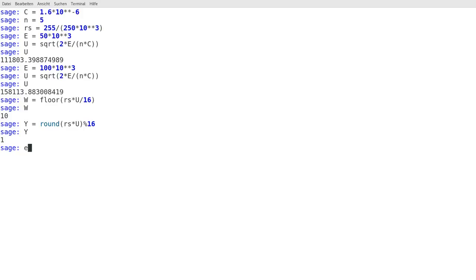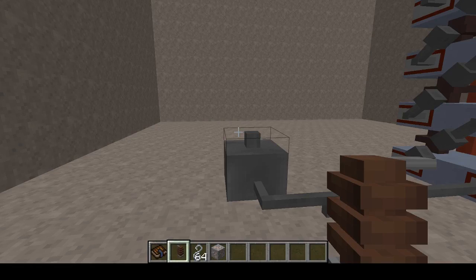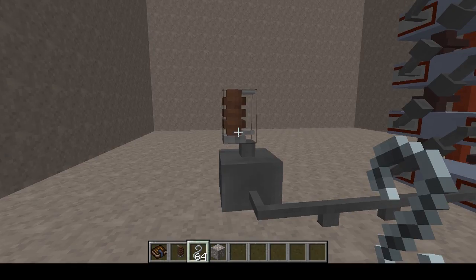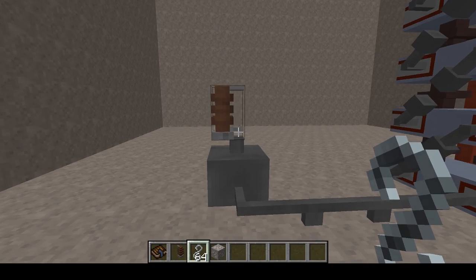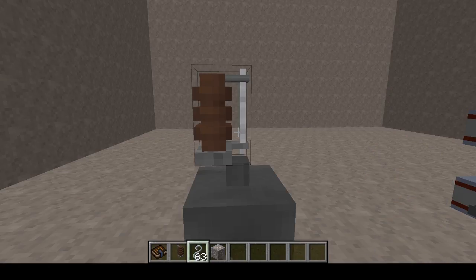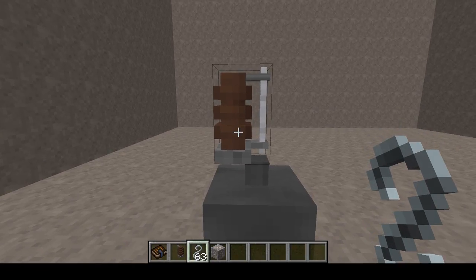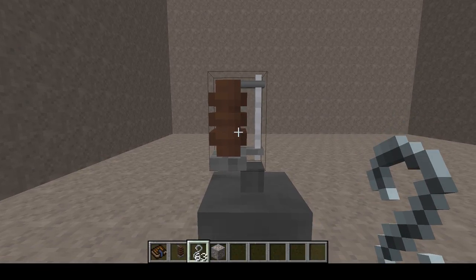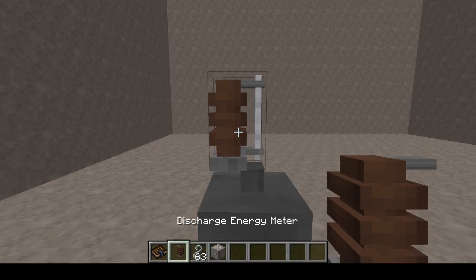In the beginning of this video, I said that this was a dev build of Industrial Wires, not one that is public yet. It's important now because this device, the energy discharge meter, is not in any of the public builds yet.